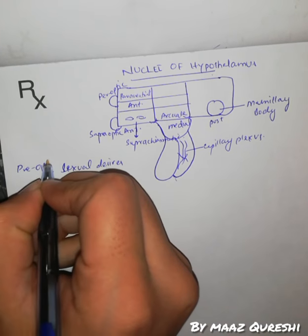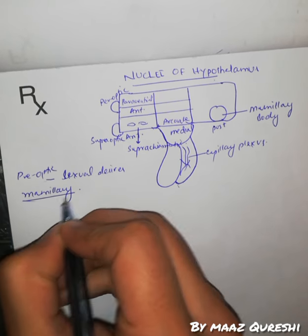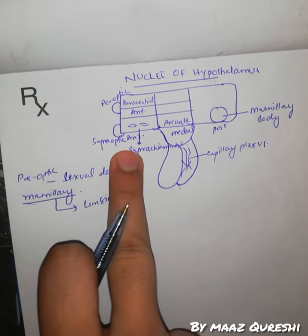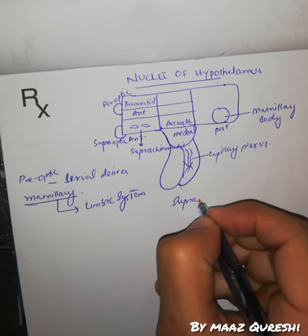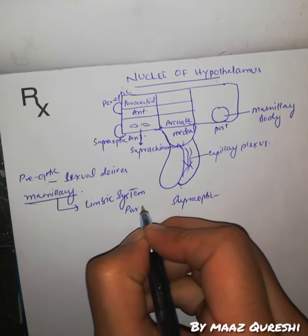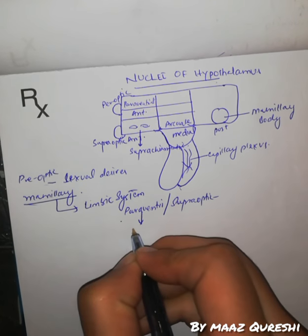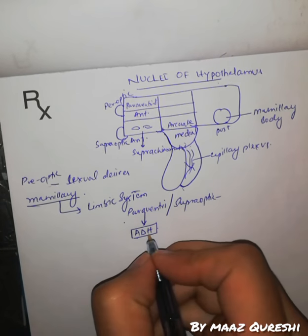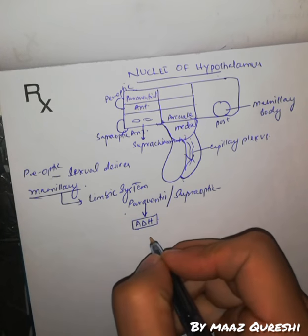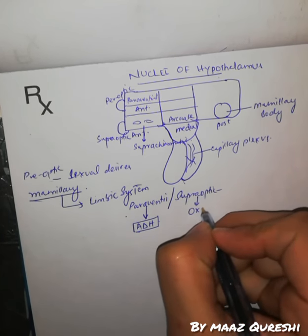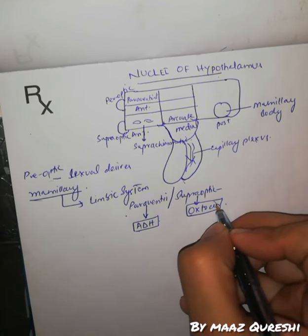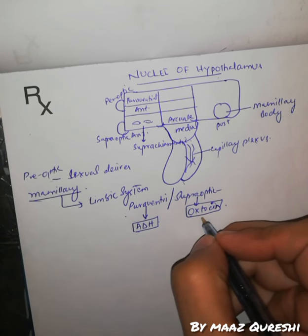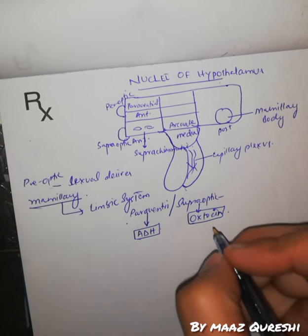The mammillary body is related to the limbic system. The paraventricular and supra-optic nuclei, which are in the anterior hypothalamus, release ADH (anti-diuretic hormone). If water or blood volume is reduced, water will be reabsorbed from the kidneys through ADH, which acts on the collecting tubules. The supra-optic nucleus also produces oxytocin, which is very important in females and is key in the third stage of labour.